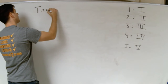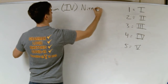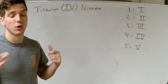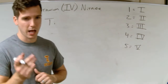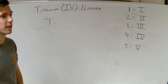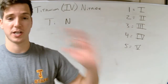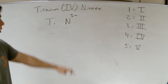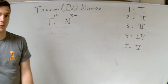Next: Titanium(IV) nitride. Titanium is Ti. Nitride ends in '-ide,' so unless it's hydroxide or cyanide, it's on the periodic table. Nitride comes from nitrogen, which is N. Nitrogen has a fixed charge of minus 3. Titanium is a transition metal, and that Roman numeral IV tells me its charge is plus 4.